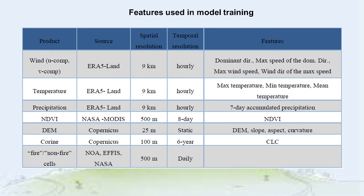Finally, for the land cover category, the data were retrieved from the Copernicus Corine product 2012 for the cells representing areas that were burned before 2014, and the Corine 2018 for the areas that were burned after 2014.